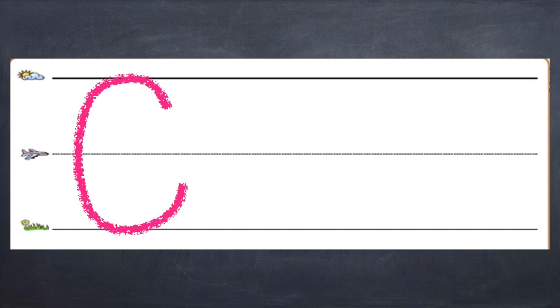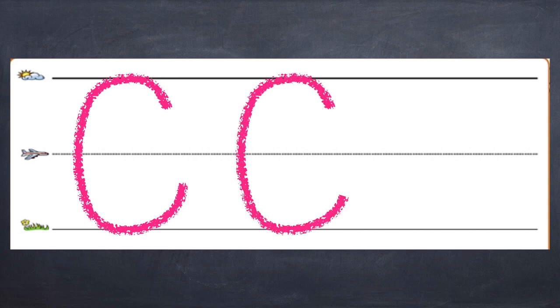When we write uppercase C, we start just under the skyline, go up to the skyline, curve down to the ground line, and up just a little bit. It looks a bit like an open circle. Let's write uppercase C two more times. Start under the skyline, go up, around, curve down to the ground line, and curve up.